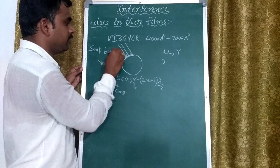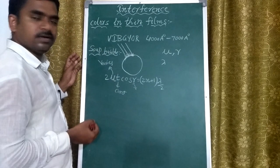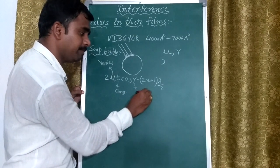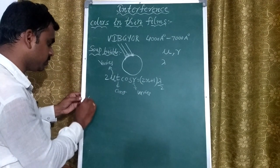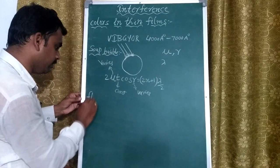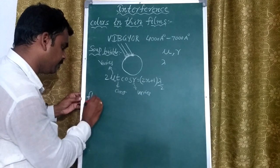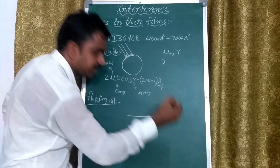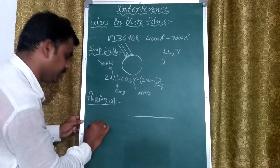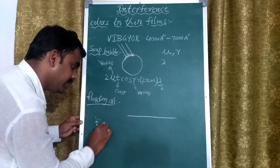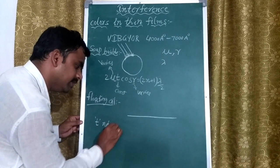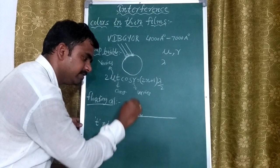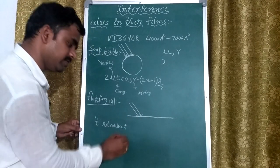The soap bubble has a spherical surface, which is why the angle of refraction r varies. But if we take a thin film — a floating oil film — the thickness may not be constant. However, the angle of incidence is the same across the film.